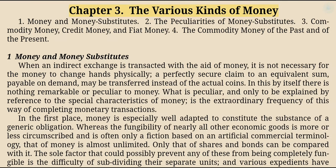Chapter 3. The various kinds of money. 1. Money and money substitutes. 2. The peculiarities of money substitutes. 3. Commodity money, credit money, and fiat money. 4. The commodity money of the past and of the present.